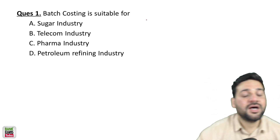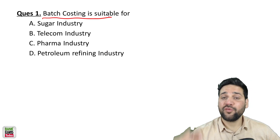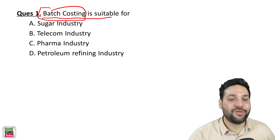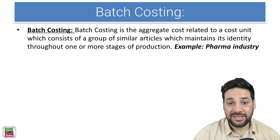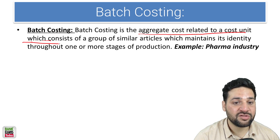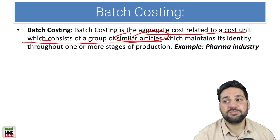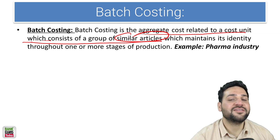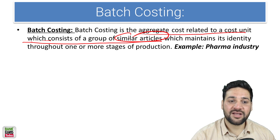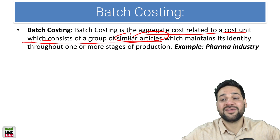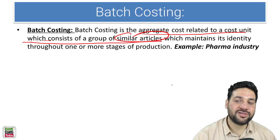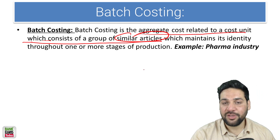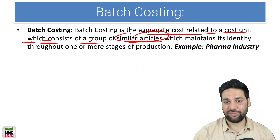You can join the SEBI Grade A 2020 course on bank exam study.com. Now, batch costing — first you should know what is batch costing and what are the various types. Batch costing is the aggregate cost relating to a cost unit which consists of a group of similar articles. The products are produced in batches; articles in one batch are similar. You know the cost of producing one batch, and dividing that by the number of units produced gives you the per unit cost.